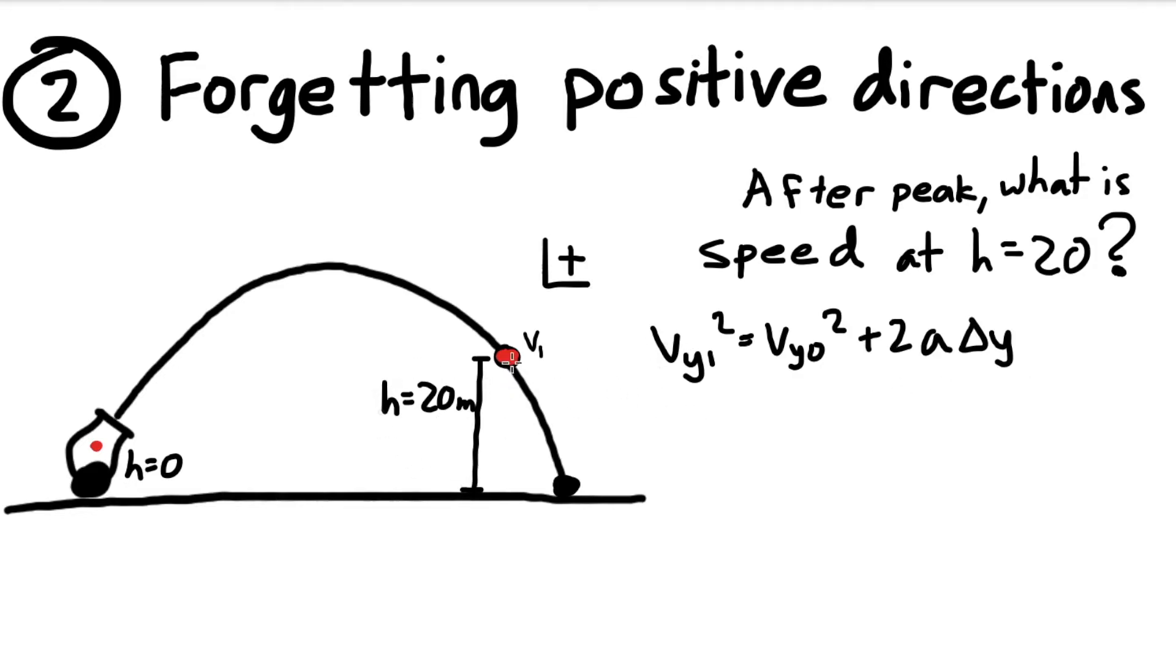But for both a and delta y, we have to be really mindful of which direction is positive. So since we end higher than we start, our delta y will be positive, but since gravity is down and our positive is up, our acceleration will be negative. So this will be v-y-1 squared is equal to v-y initial squared minus 2 times gravity times positive 20, and then we can solve this for our v-y and then solve that for our speed.